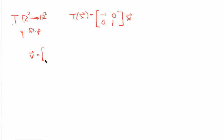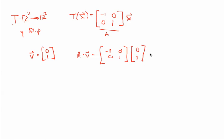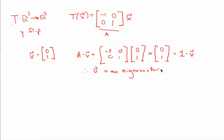Let's start with vector v = (0, 1). We know this is going to be an eigenvector. Let's call this matrix A and compute A times v. That's [(-1, 0), (0, 1)] times (0, 1). Carrying out the multiplication: the first entry is (-1)(0) + (0)(1) = 0, and the second entry is (0)(0) + (1)(1) = 1. So we get (0, 1), which equals 1 times v. Therefore v is an eigenvector for matrix A with eigenvalue λ = 1.